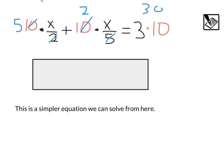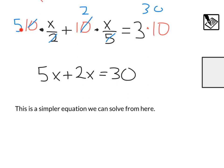So taking both of those, we end up with this 5 times x, or 5x, plus 2 times x, or 2x, equals 30. And this is a much simpler equation to solve. Just combine these like terms and divide. We're not going to solve from here, but our main thing was multiplying by the common denominator, and we can see that we eliminated those fractions.